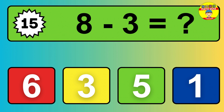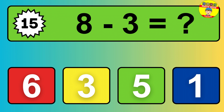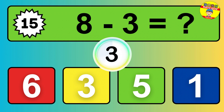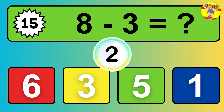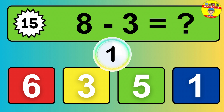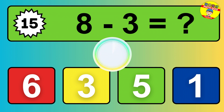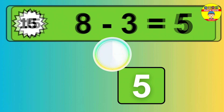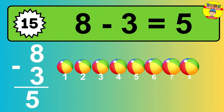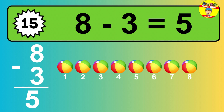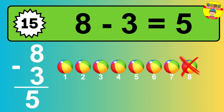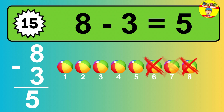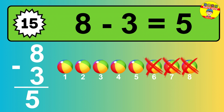Question fifteen: eight minus three equals what? So the answer is, eight minus three is five. Let's count it. One, two, three, four, five.